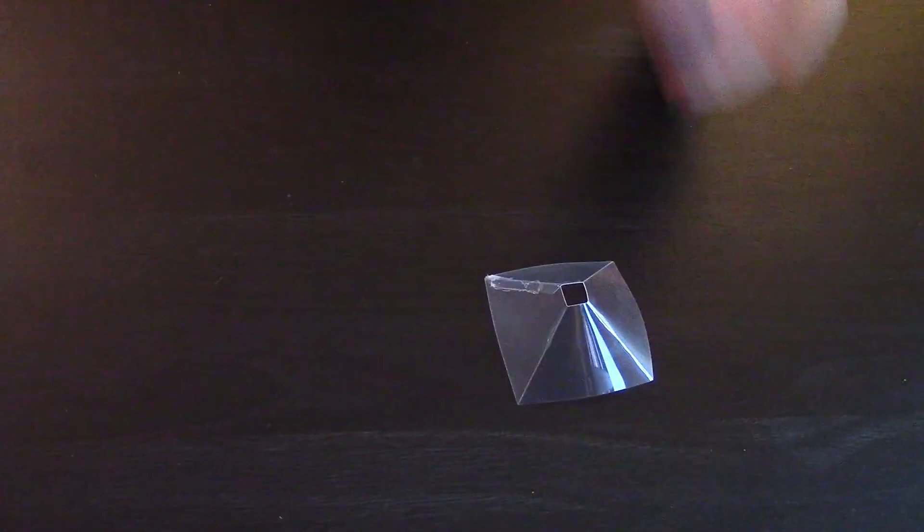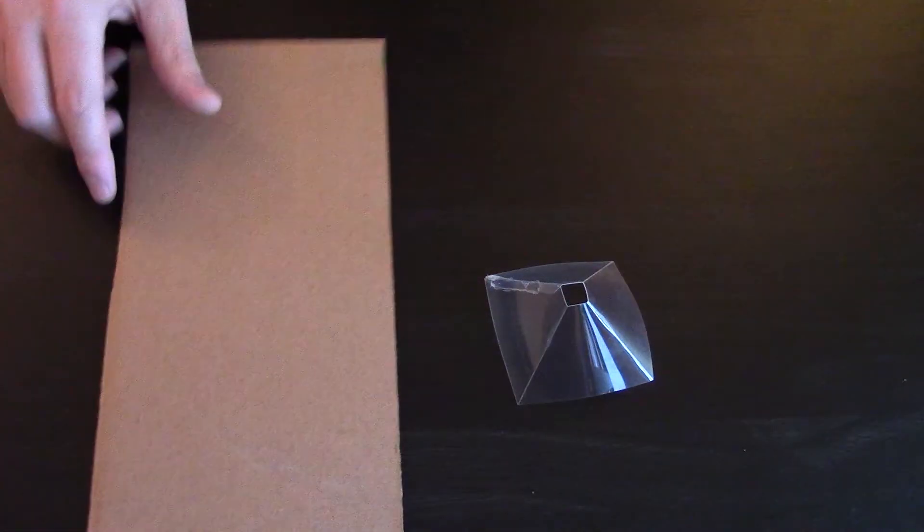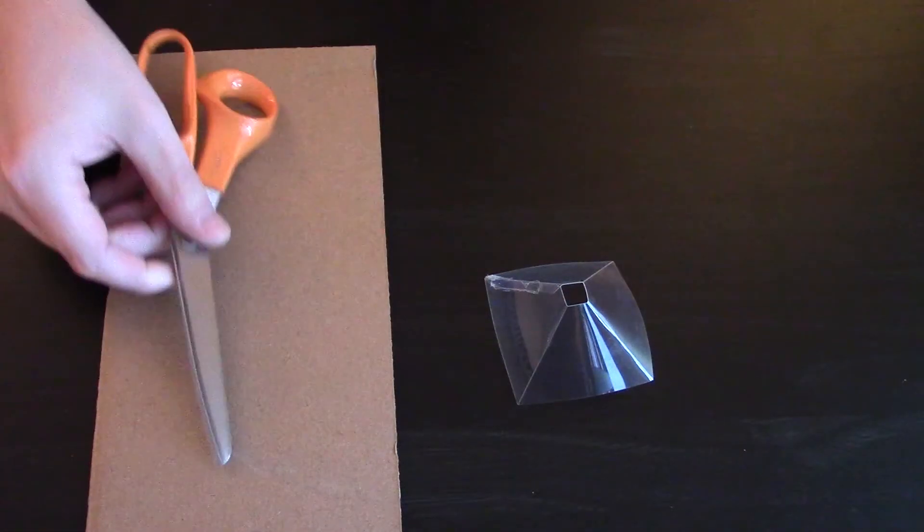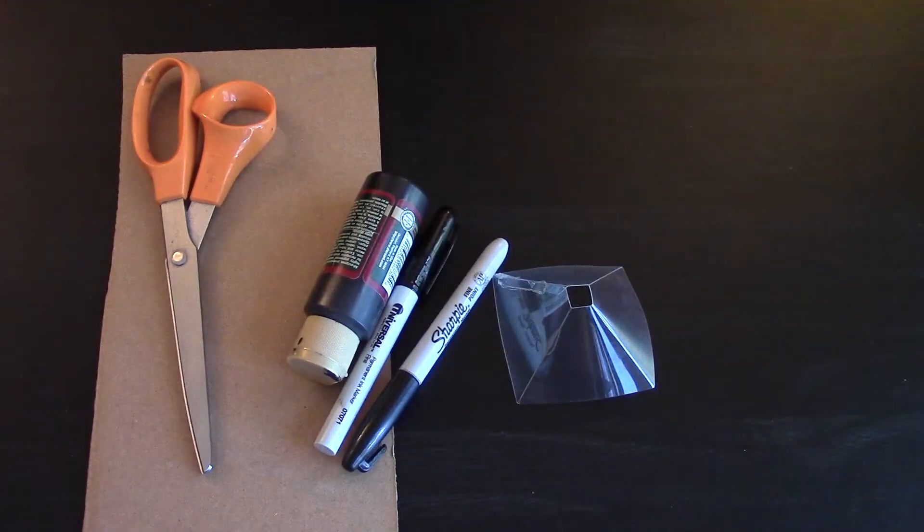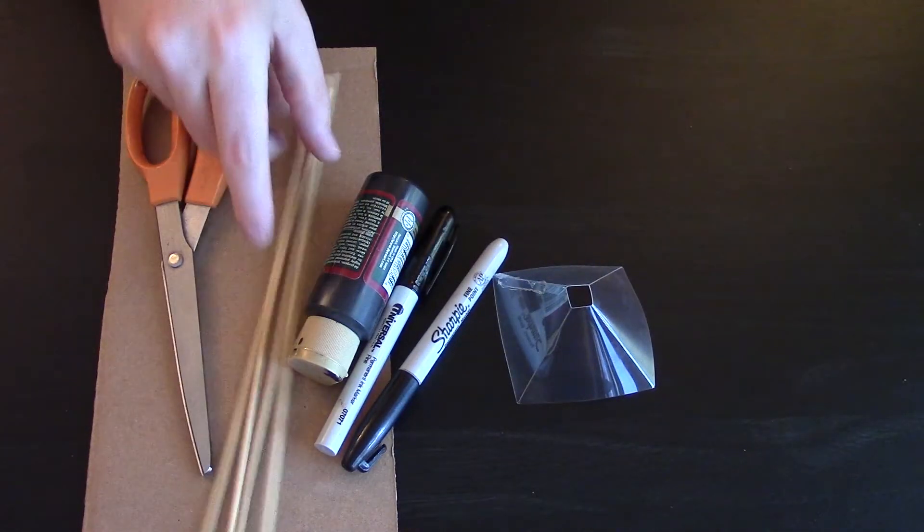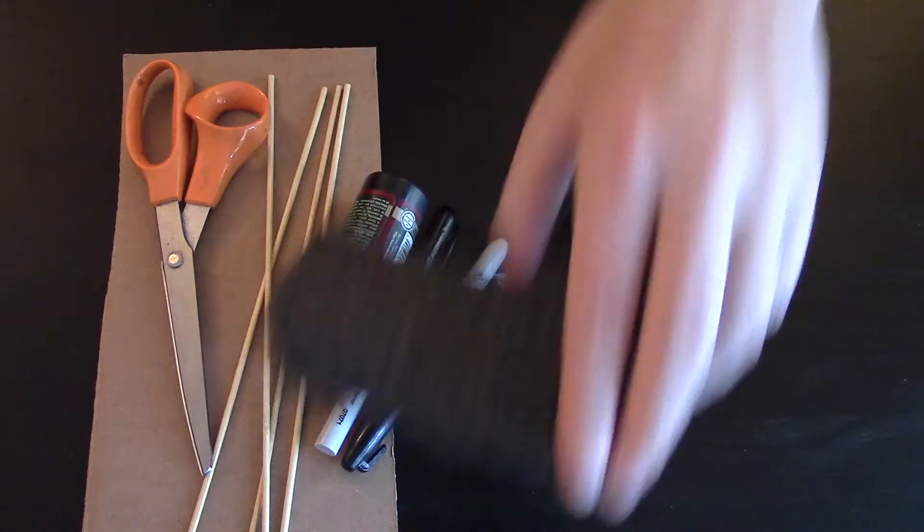For this tutorial you will need the plastic pyramid we created in a previous tutorial, a piece of cardboard, some scissors, some black paint or some black markers, some shish kebab sticks, and as another option some packing foam.